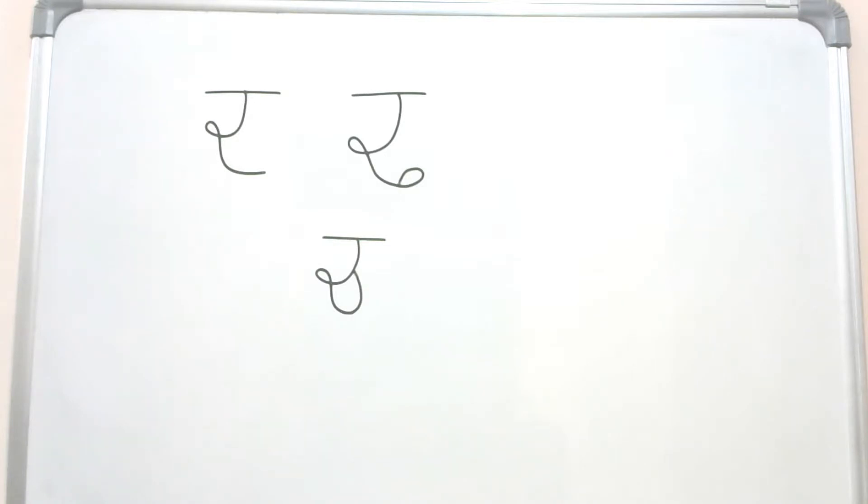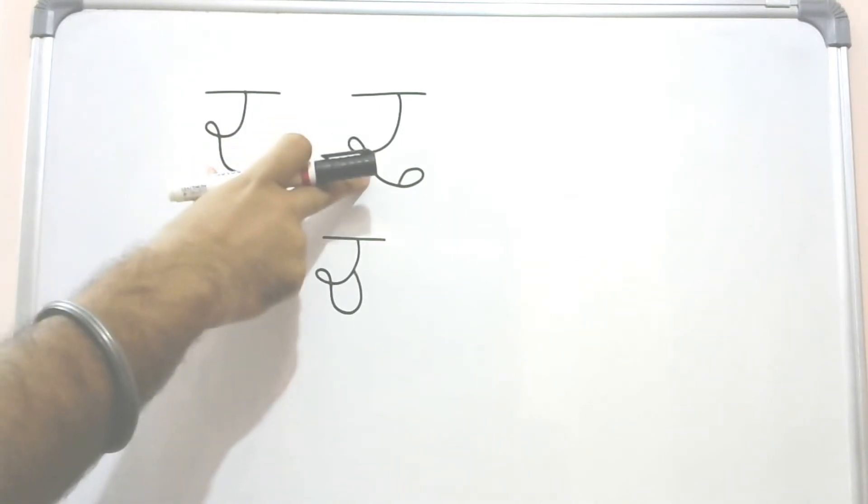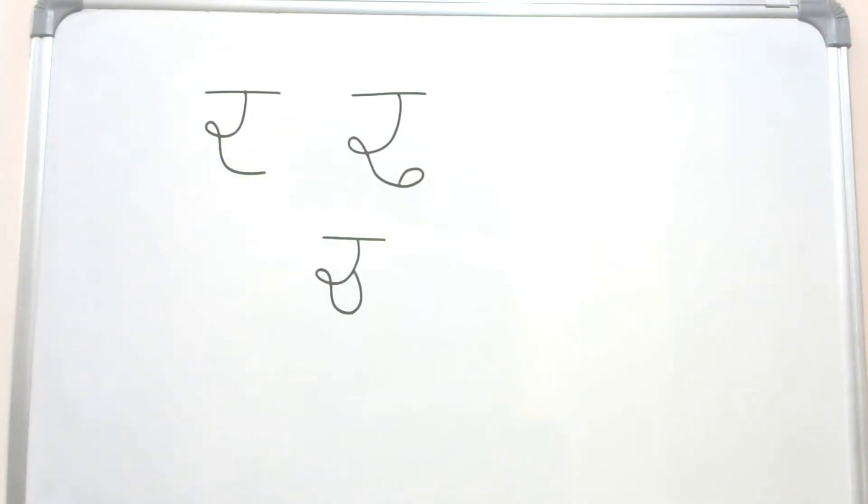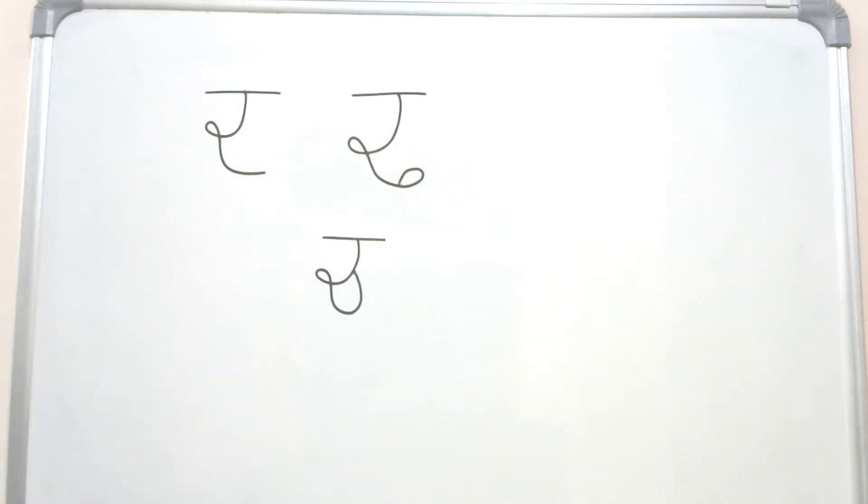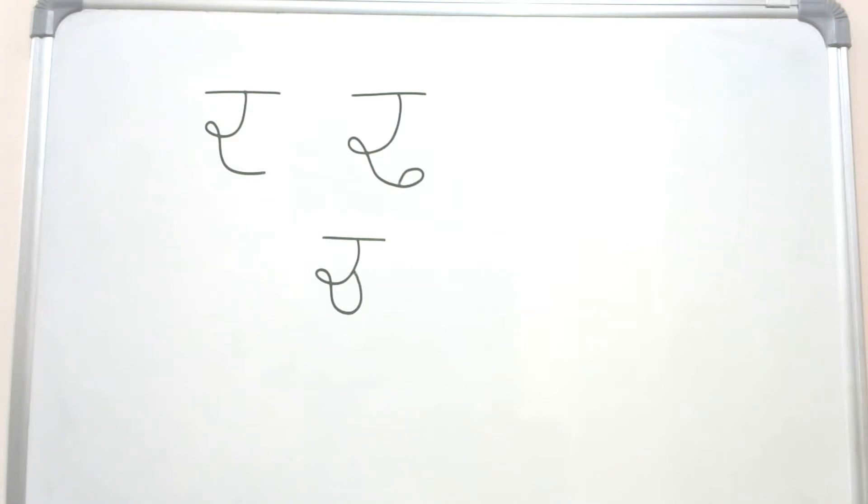You can see the similarities between these three letters, right? So this structure that we have here is there in this letter also and this letter also. The only difference between this letter and this letter is this circle that we have here. And if we compare this letter with this letter, then we connected this end with this thing, so it will become my Chacha.